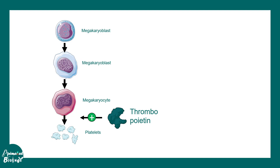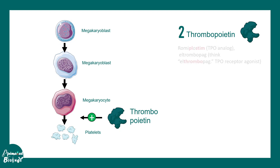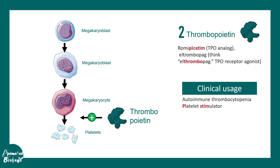Thrombopoietin is another molecule that helps in the process of platelet development. Thrombopoietin could be very useful for autoimmune thrombocytopenia — it is a good stimulator of platelets in diseases where platelet levels are low, so this particular drug could be useful.